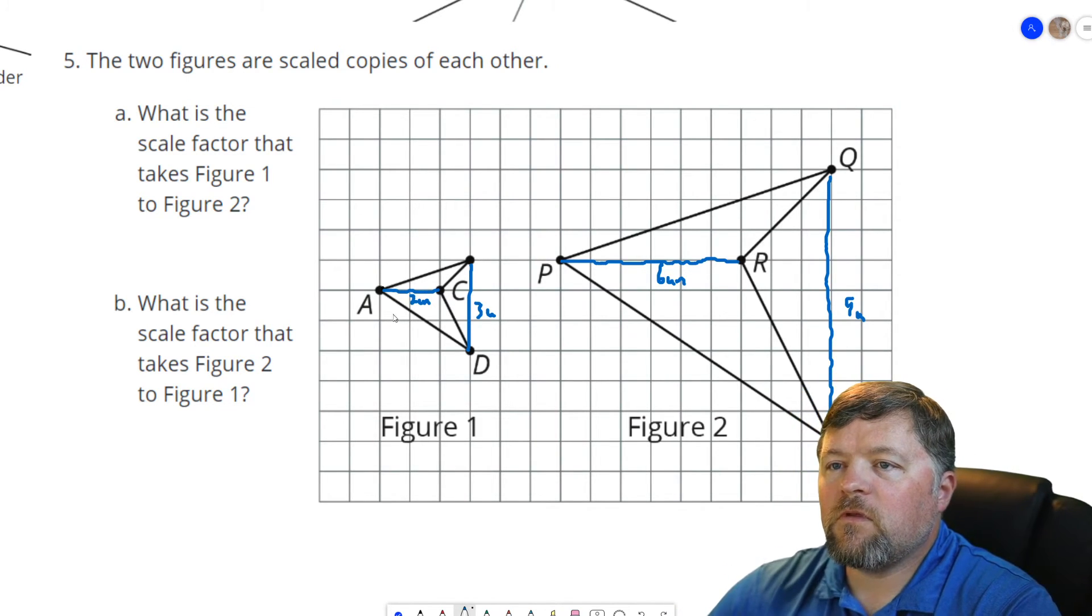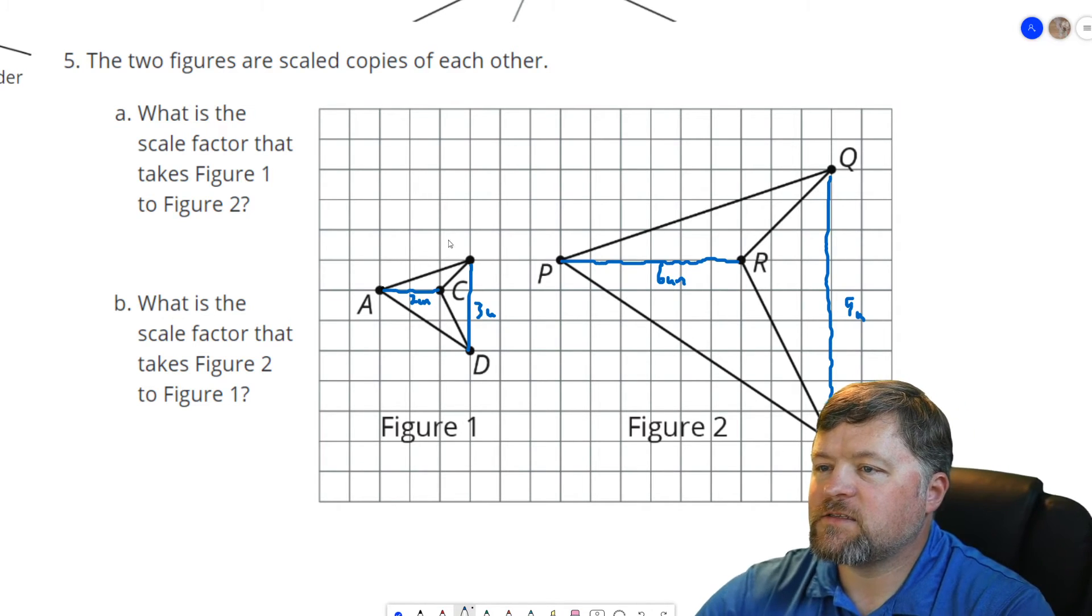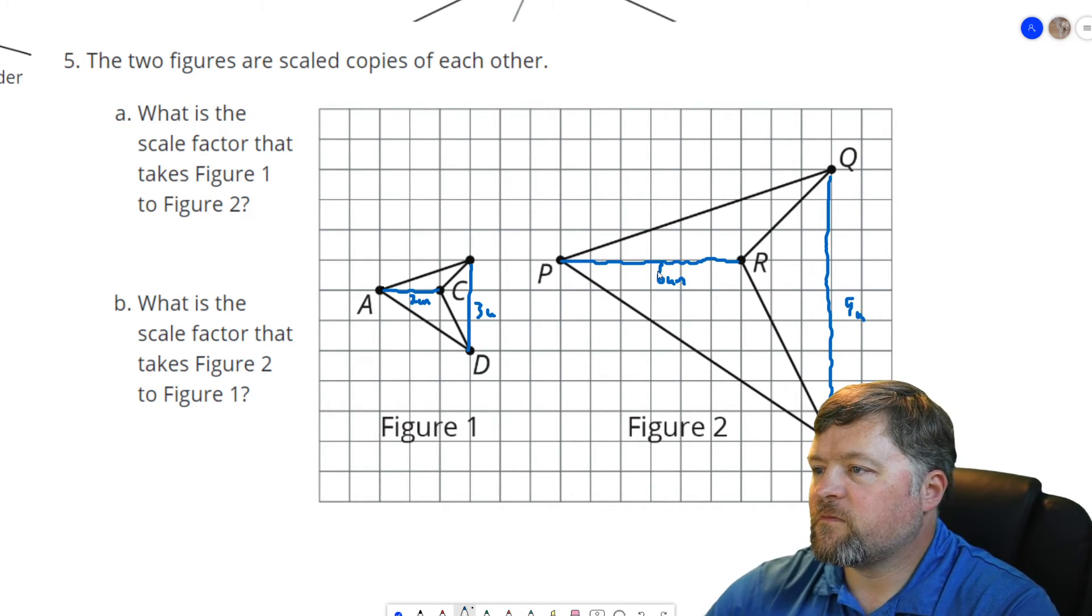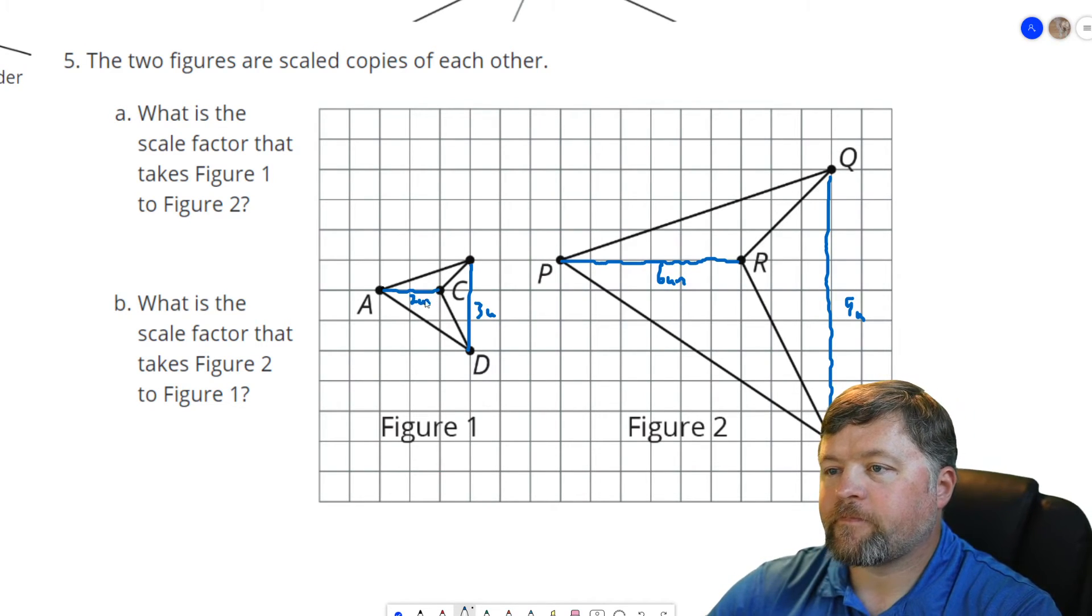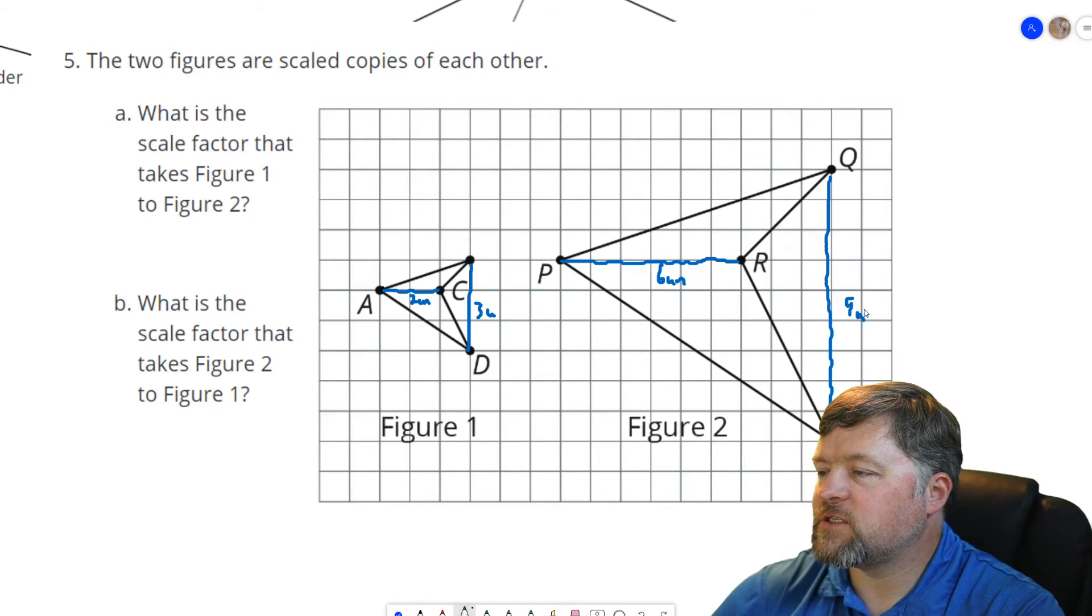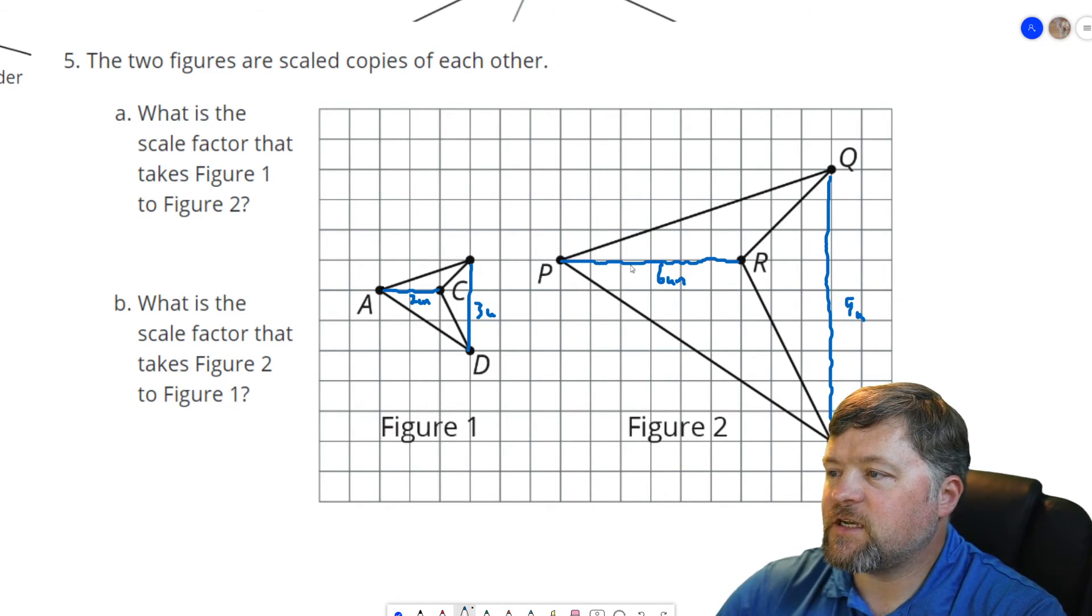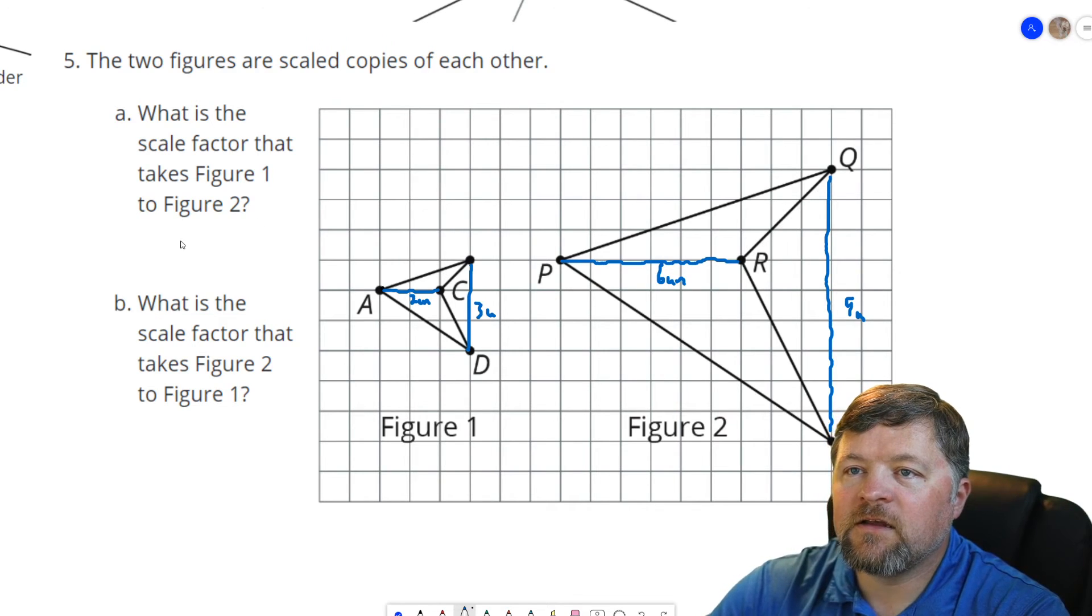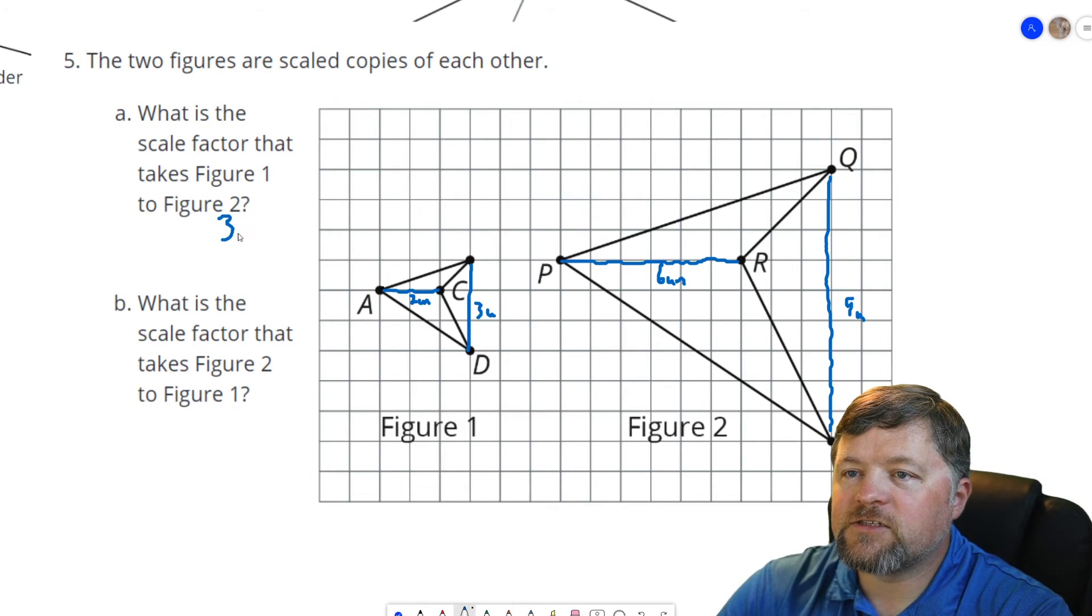So what would we have to scale this by to get this? Well, from two units to six units, that's three times bigger. From three units to nine units, that's also three times bigger. Two times three is six. Three times three is nine. The scale factor from figure one to figure two is three.